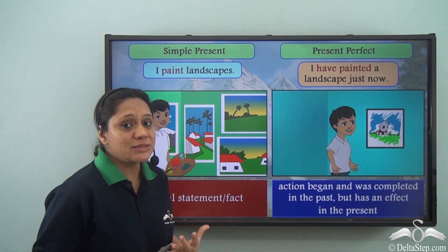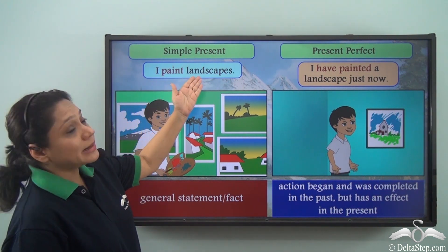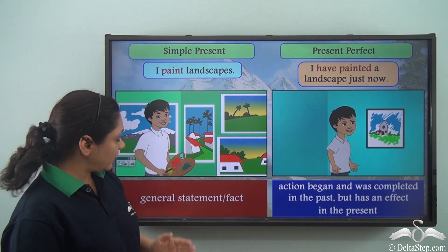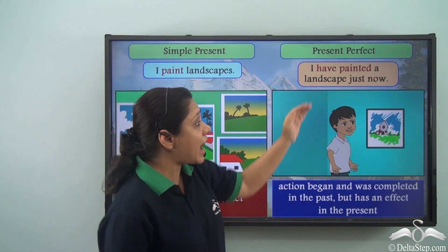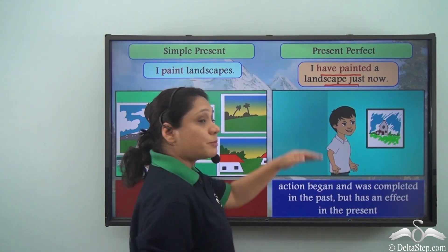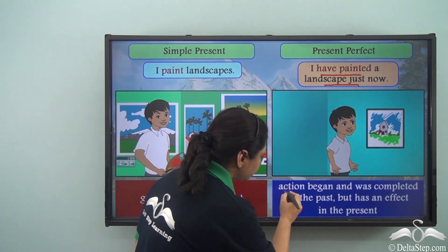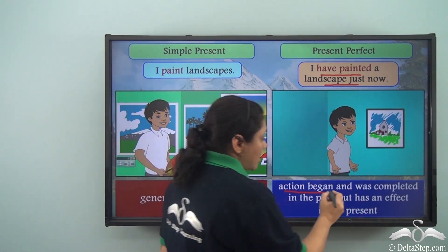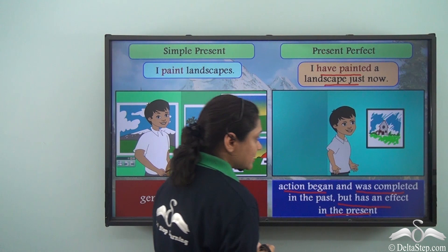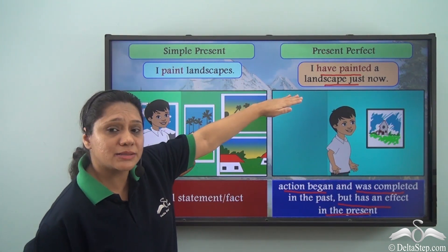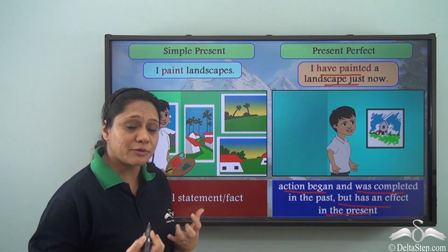If you want to revise the differences between some confusing present tenses, let us do that. "I paint landscapes" is in the simple present tense, telling us a general statement or a fact. But "I have painted a landscape just now" is in the present perfect tense — it shows that an action began in the past, was completed in the past, and has an effect in the present. So it refers to an action which has just been completed.